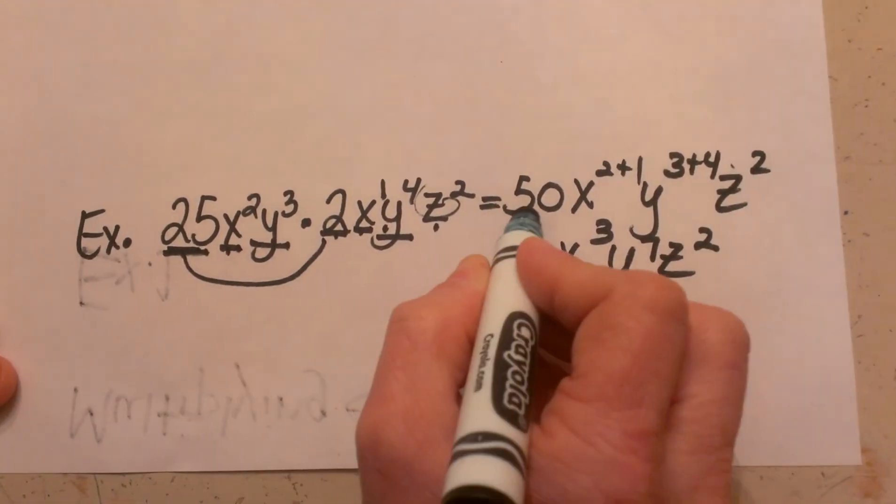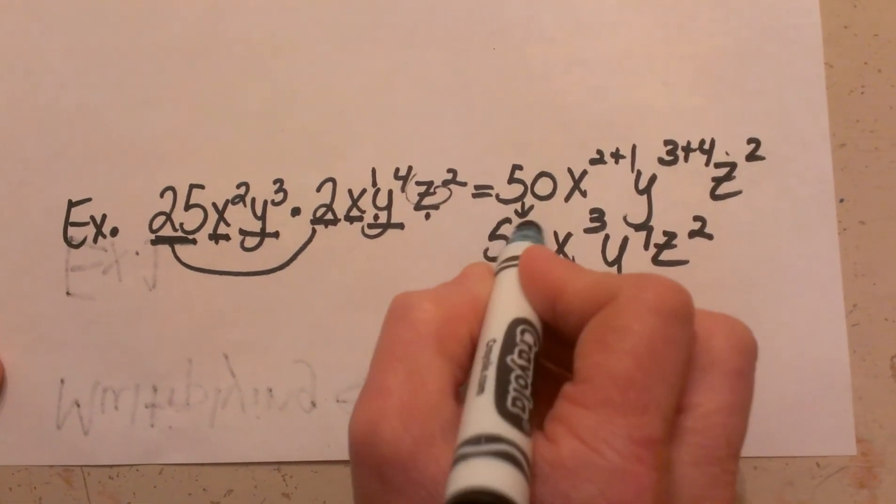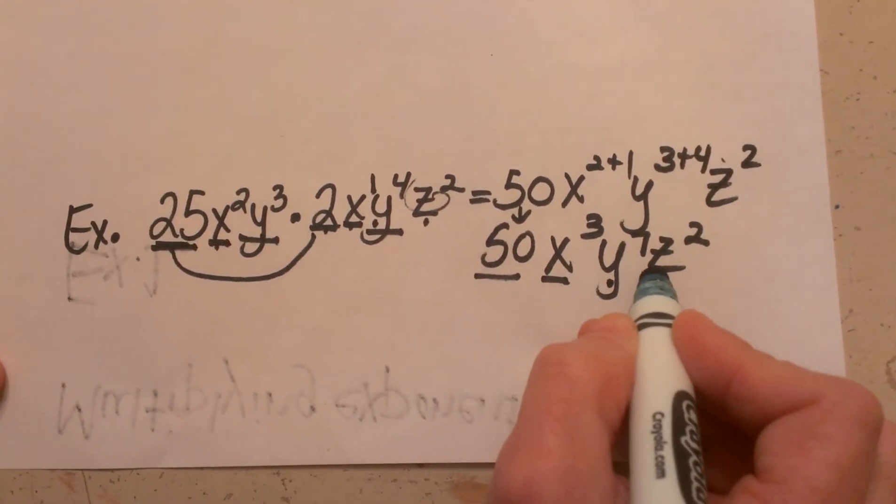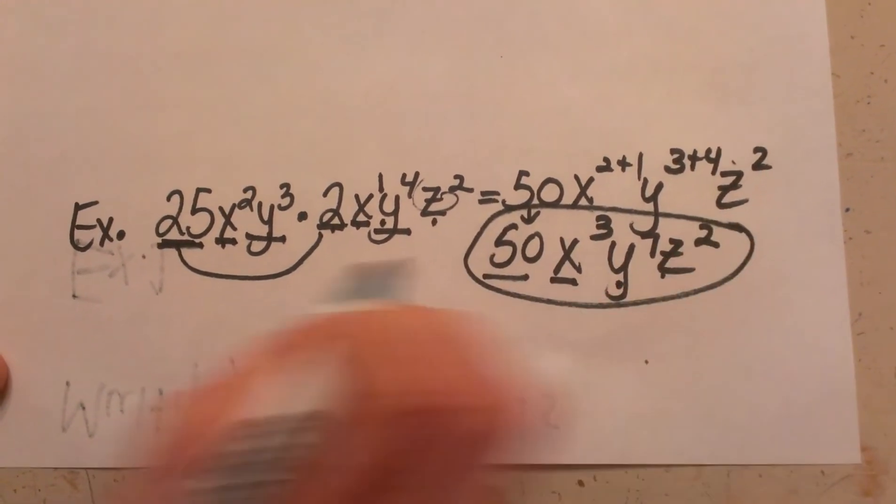So let us bring that down and bring down my coefficient. So my answer is 50 x cubed y to the seventh z squared and that is my final answer.